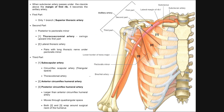The axillary artery itself is divided into three parts for convenience, which makes it easier to divide up the branches that come off of it. The first part is from the start of the axillary artery up until it reaches the pectoralis minor. The second part is where it is deep to the pectoralis minor. The third part is from where it emerges from underneath the pectoralis minor to its end at the lower border of teres major. Conveniently, there is one branch from the first part, two from the second, and three from the third.